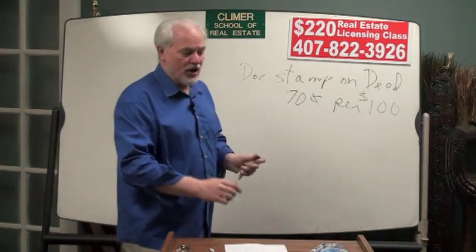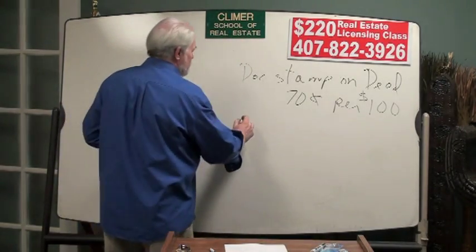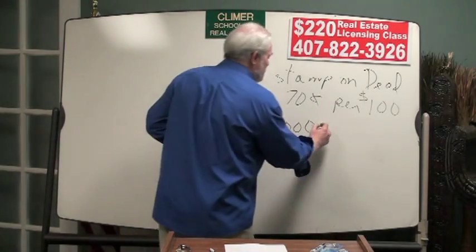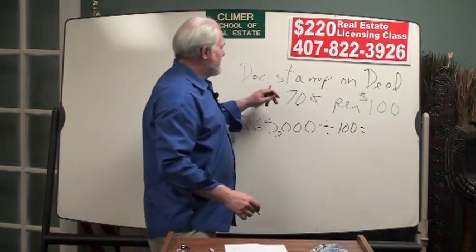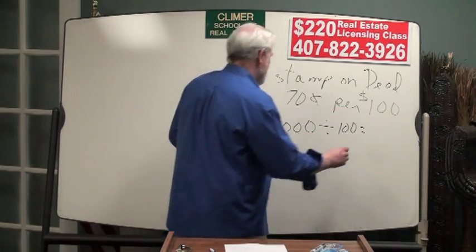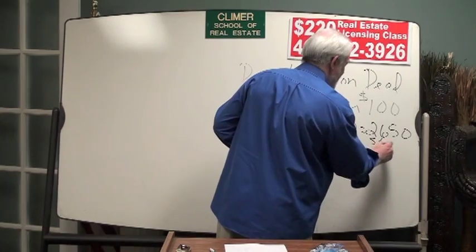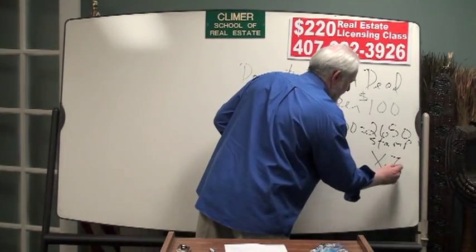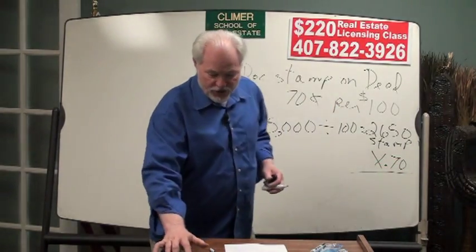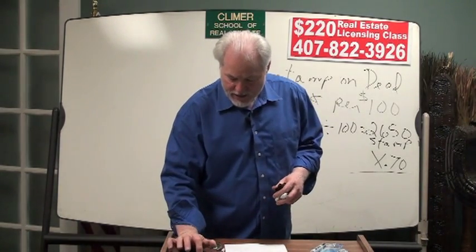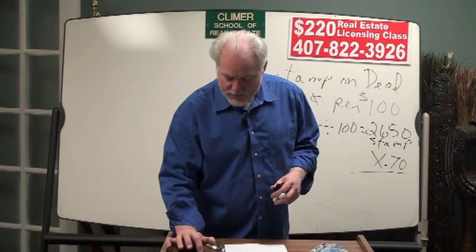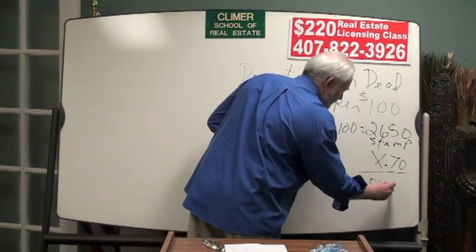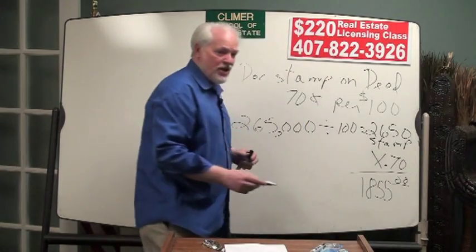What that means is, if you bought a house for, say, $265,000, that's the price of the house, you divide this by a hundred to figure out how many stamps you need, because the stamps are per $100. So you need 2,650 stamps. That's how many stamps you need, and they cost 70 cents, so you times that by .70. That's 2,650 times .70, and my calculator says $1,855 and no cents.